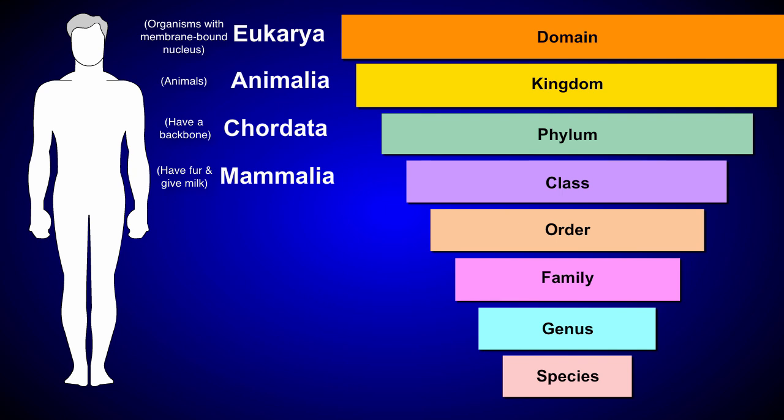Within each class, organisms are grouped into different orders. Humans belong within the order Primates, along with monkeys. Dogs are not included in this order.